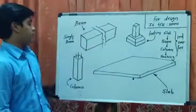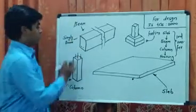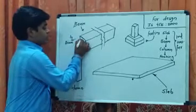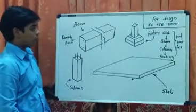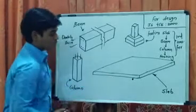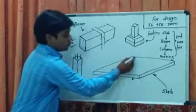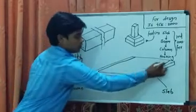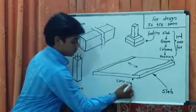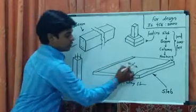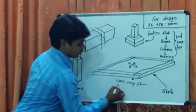In a beam, if steel is at the bottom only, then that is a singly reinforced beam. But if the beam has steel on both sides, then that is a doubly reinforced beam. Talking about slab: if the slab is transferring load to two beams on opposite edges, then this is a one-way slab. If the slab is transferring load to beams on all four edges, that is a two-way slab.